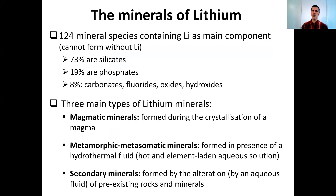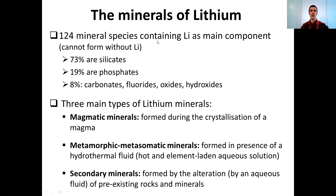Today we will look at the minerals of lithium. We know so far 124 mineral species containing lithium as a main component. That means these minerals cannot form if there is no lithium available. They are distributed as follows: 73% are silicates, 19% are phosphates, and the remaining 8% are carbonates, fluorides, oxides, and hydroxides.